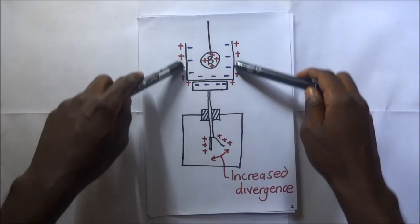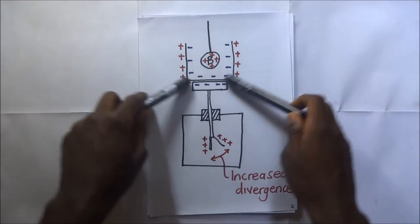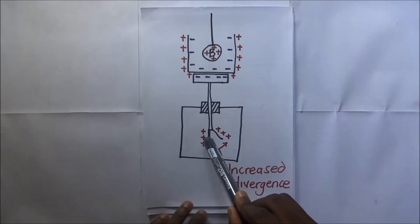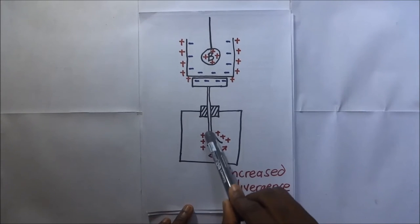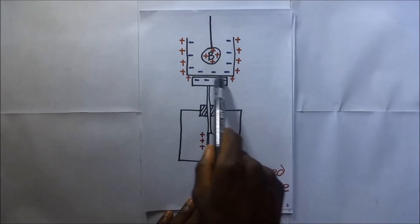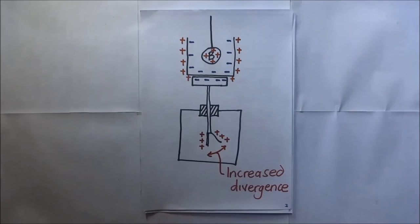So outside the ice pail we have a positive charge that is induced all over. Now because of this positive charge induced outside the ice pail, this positive charge is going to attract electrons or negative charges from down here. And so negative charges are going to be attracted from the gold leaf and concentrate more here on the cup.